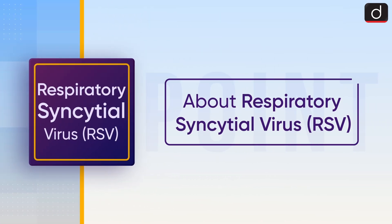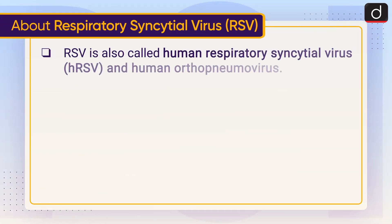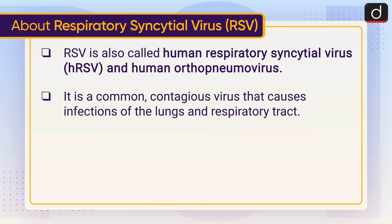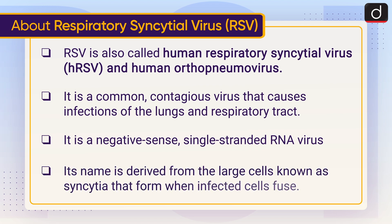Now let's know about Respiratory Syncytial Virus, i.e. RSV. RSV is also called Human Respiratory Syncytial Virus or HRSV, and Human Ortho-Pneumovirus. It is a common, contagious virus that causes infections of the lungs and respiratory tract. It is a negative-sense, single-stranded RNA virus. Its name is derived from the large cells known as syncytia that form when infected cells fuse.